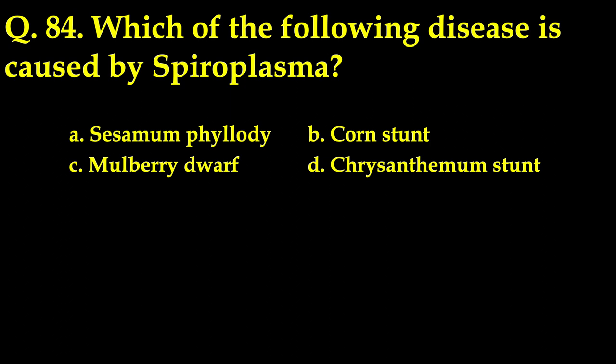The next question: which disease is caused by Spiroplasma? The correct answer is corn stunt. Spiroplasma is a helical wall-less prokaryote that requires cholesterol for growth and development and causes diseases in plants, insects, and rats. They are insensitive to penicillin but sensitive to erythromycin and tetracycline. Common examples of diseases caused by Spiroplasma include corn stunt, citrus stubborn, and many more.